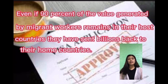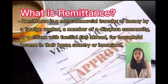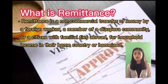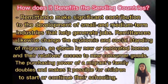Now let's talk about the benefits for sending countries. Even if 90 percent of the value generated by migrant workers remains in their host countries, they have sent billions back to their home countries — this is called remittance. Remittance is a non-commercial transfer of money by a foreign worker, a member of a diaspora community, or a citizen with family ties abroad, for household income in their home country. Remittance has made significant contributions to the development of small and medium industries that help generate jobs. It has likewise changed the economic and social standing of migrants, as shown by new or renovated homes and their relatives' access to new consumer goods. The purchasing power of a migrant's family doubles and makes it possible for children to start or continue their schooling.